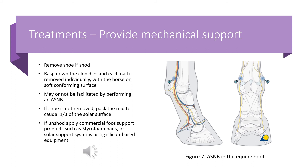If the shoe is not removed, pack the mid to caudal one-third of the solar surface of the hoof. If the horse is unshod, apply a commercial foot support product such as styrofoam pads or silicone-based solar support systems. If these are unavailable, place padding over the caudal one-third of the hoof using a rolled bandage taped in place. This may not be sufficient for large horses but can work for smaller horses, ponies, and donkeys. Keep animals on deep conforming surfaces for support.